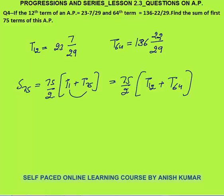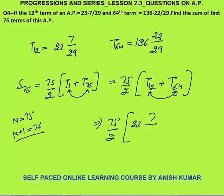The pattern states that the sum of term numbers must equal n plus 1. Here, 1 plus 75 equals 76, which is n plus 1. Also, 12 plus 64 equals 76, which equals n plus 1 since n is 75. So this condition is satisfied in both cases, and I can use t12 plus t64. So the sum is 75 by 2 times (23 and 7/29 plus 136 and 22/29).